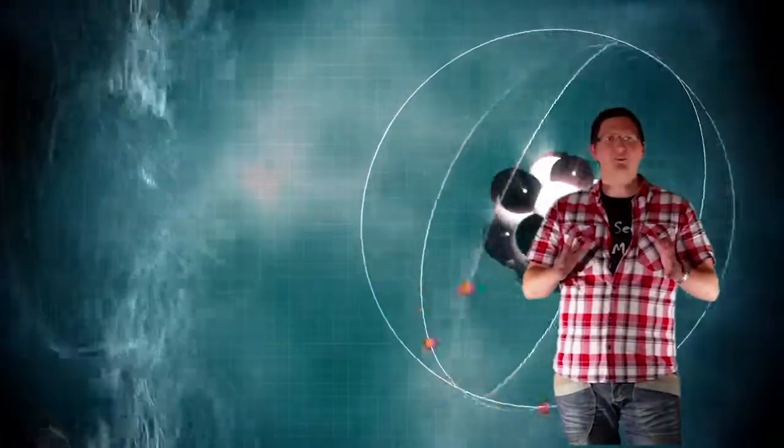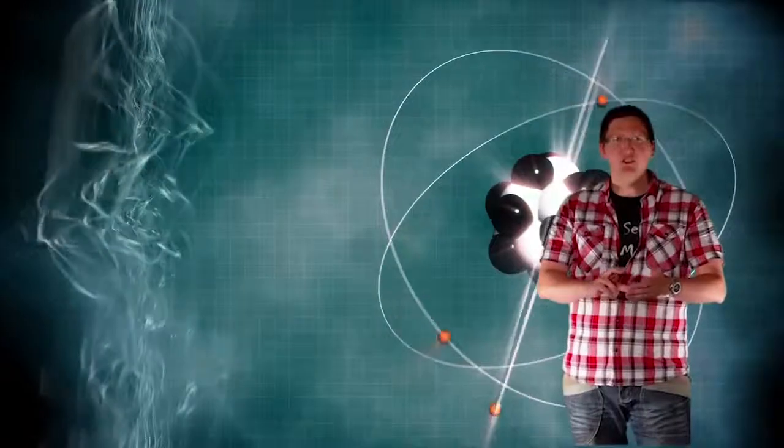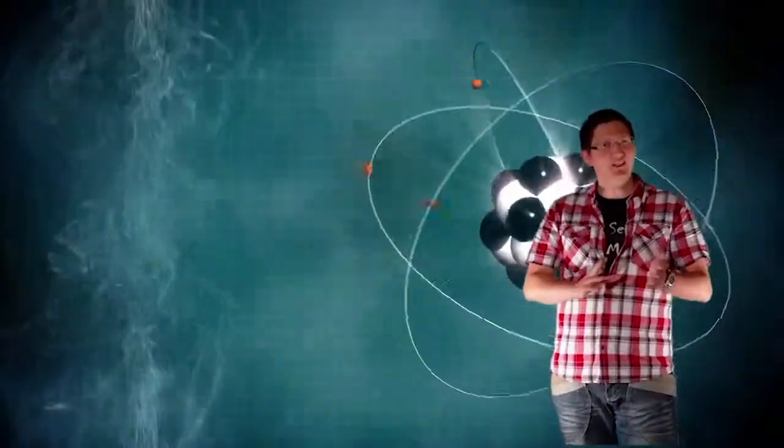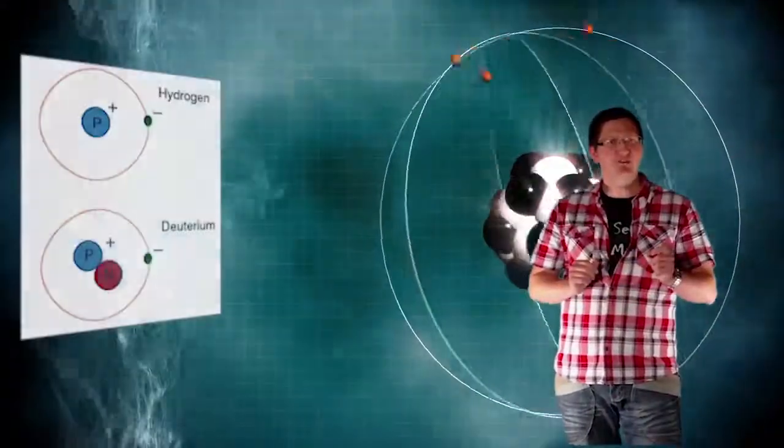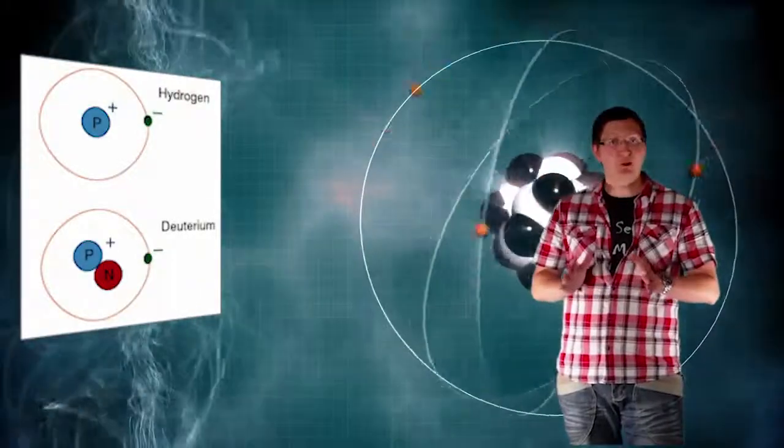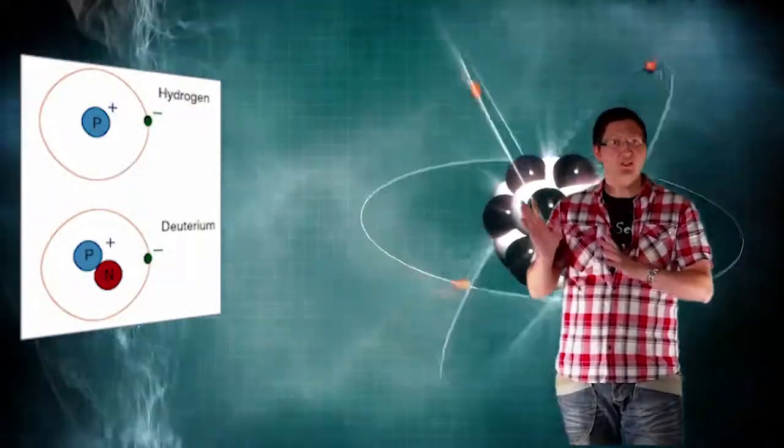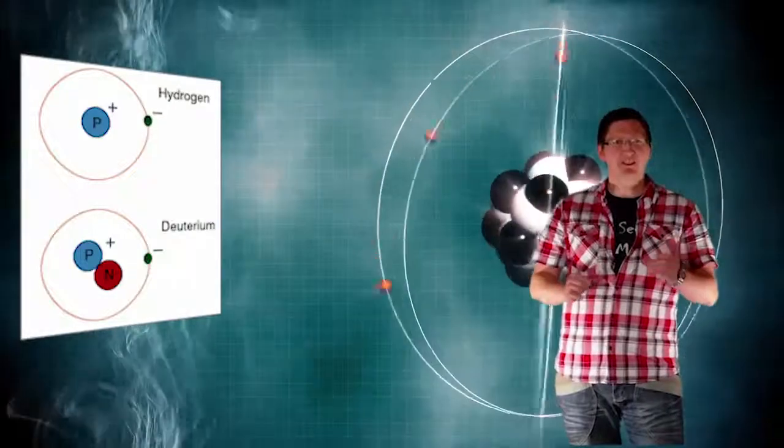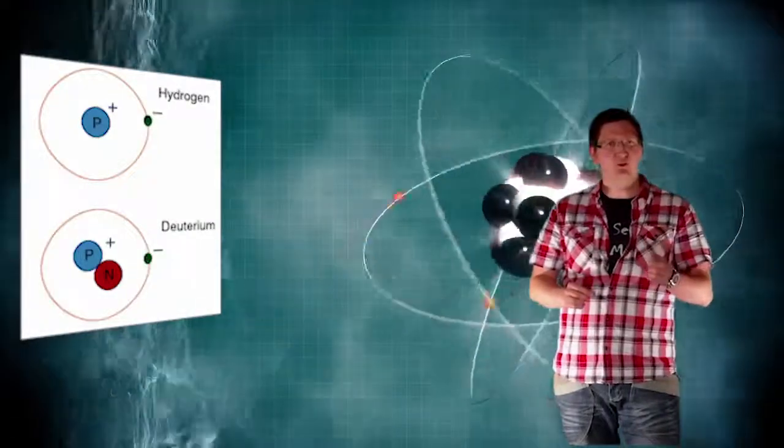20 minutes after the Big Bang, helium nuclei formed. That's two protons and two neutrons together with deuterium, which is an isotope of hydrogen. I'll cover isotopes in another topic, but basically deuterium consists of one proton and one neutron stuck together.